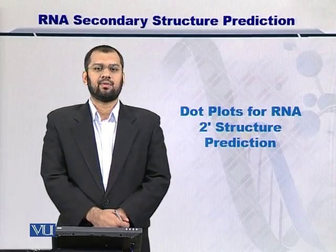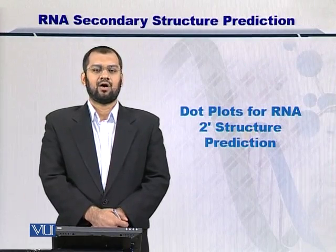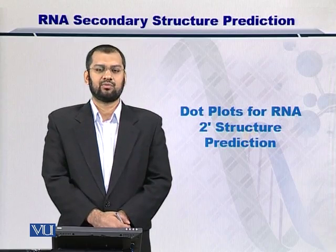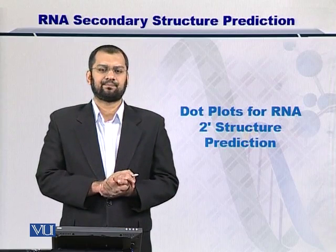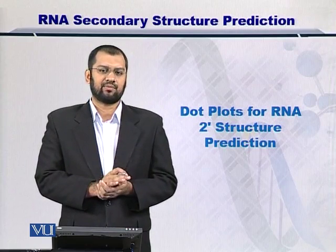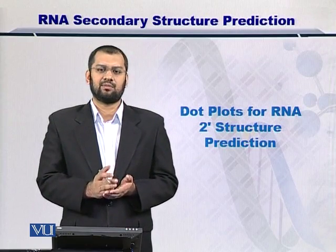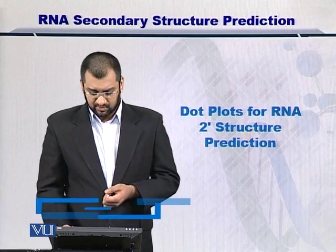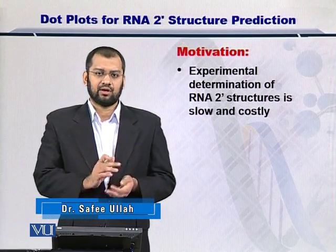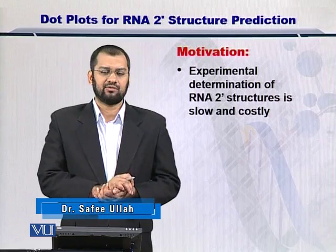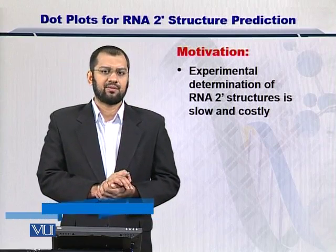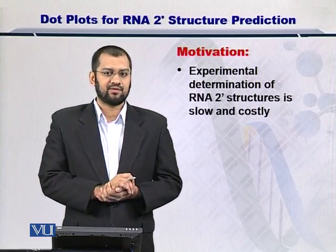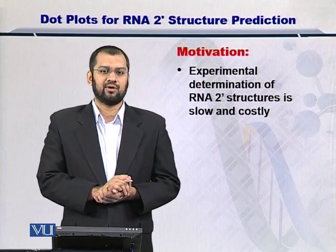Dear students, in this module we will see how to enumerate all the possible secondary structures that can be formed out of the nucleotide sequence of an RNA. As you know, RNA is composed of primary structure, that is the sequence; the secondary structure, which includes hairpin loops and bulges; and the tertiary structure. Given a primary structure, we need to look at all the possibilities. We need to do this because experimental apparatuses to determine RNA structure are extremely expensive and the process itself is extremely slow.